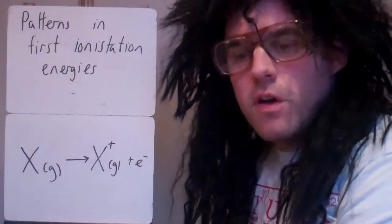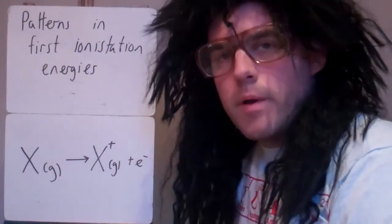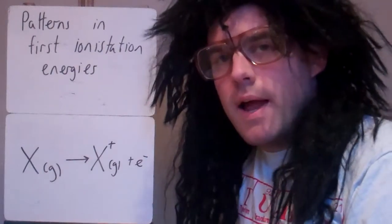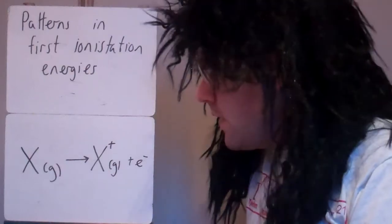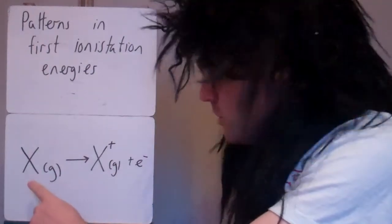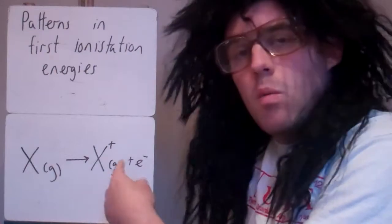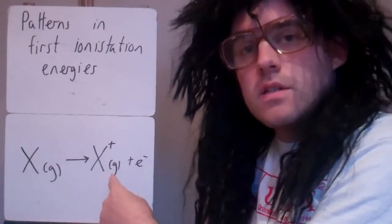Okay, so we're looking at patterns in first ionisation energies now, and we're going to be looking across a period and down a group. Just a quick reminder, first ionisation energy is when you have one mole of gaseous atoms lose one mole of electrons to become one mole of one plus gaseous ions.